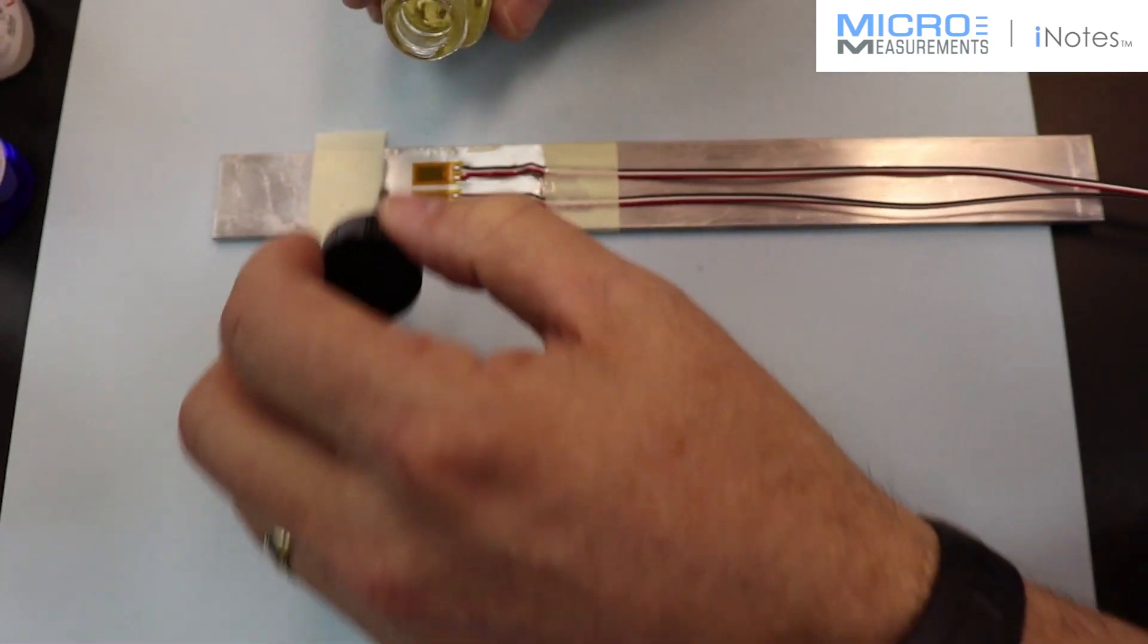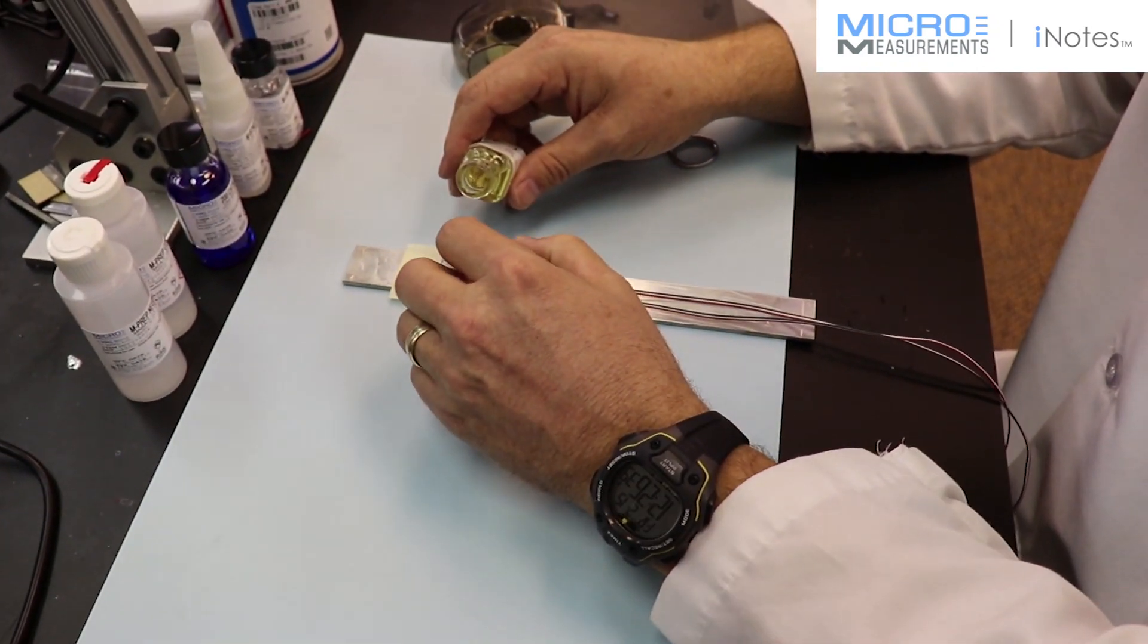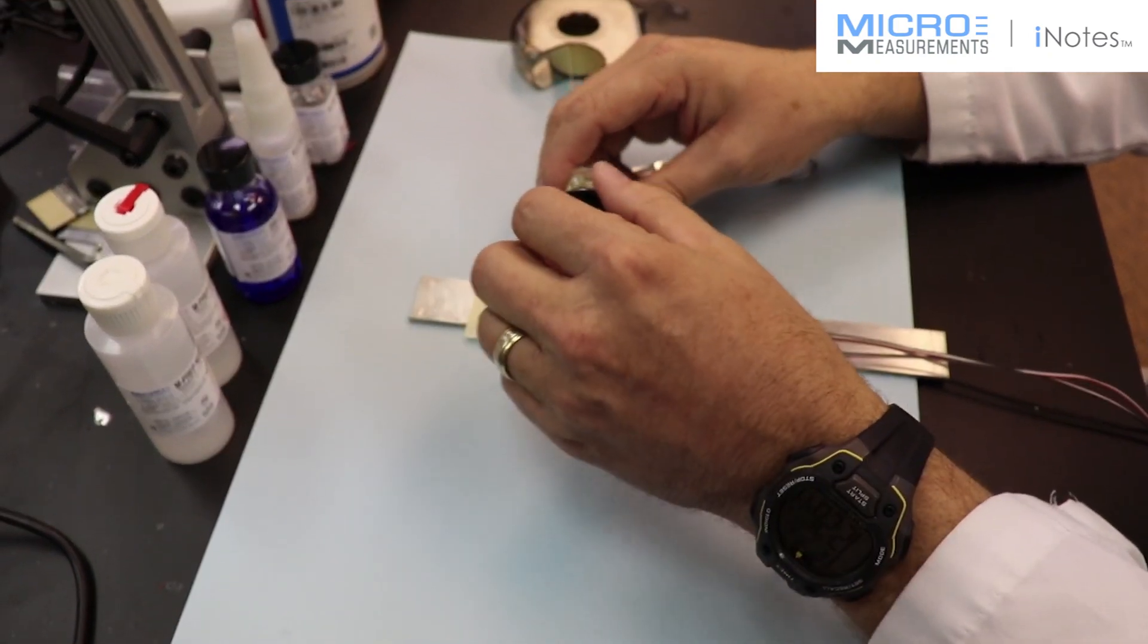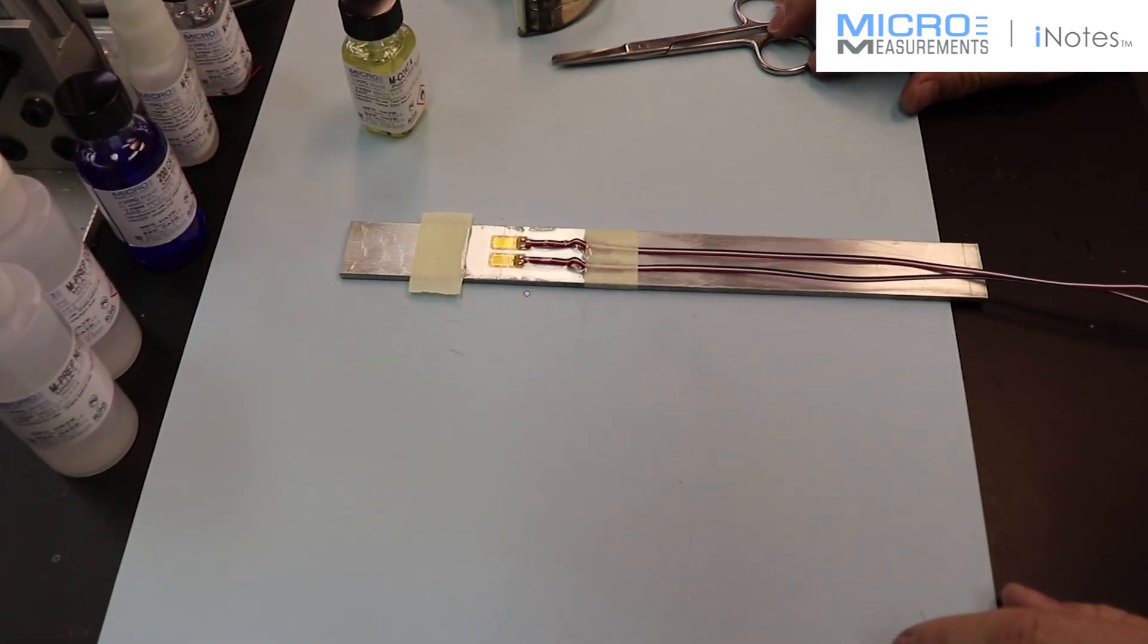And this is a coating very similar to conformal coatings that manufacturers use on printed circuit boards to protect them. But that's really it. Now I'll take that, close it up. We'll wait for it to dry, and then we're basically done.